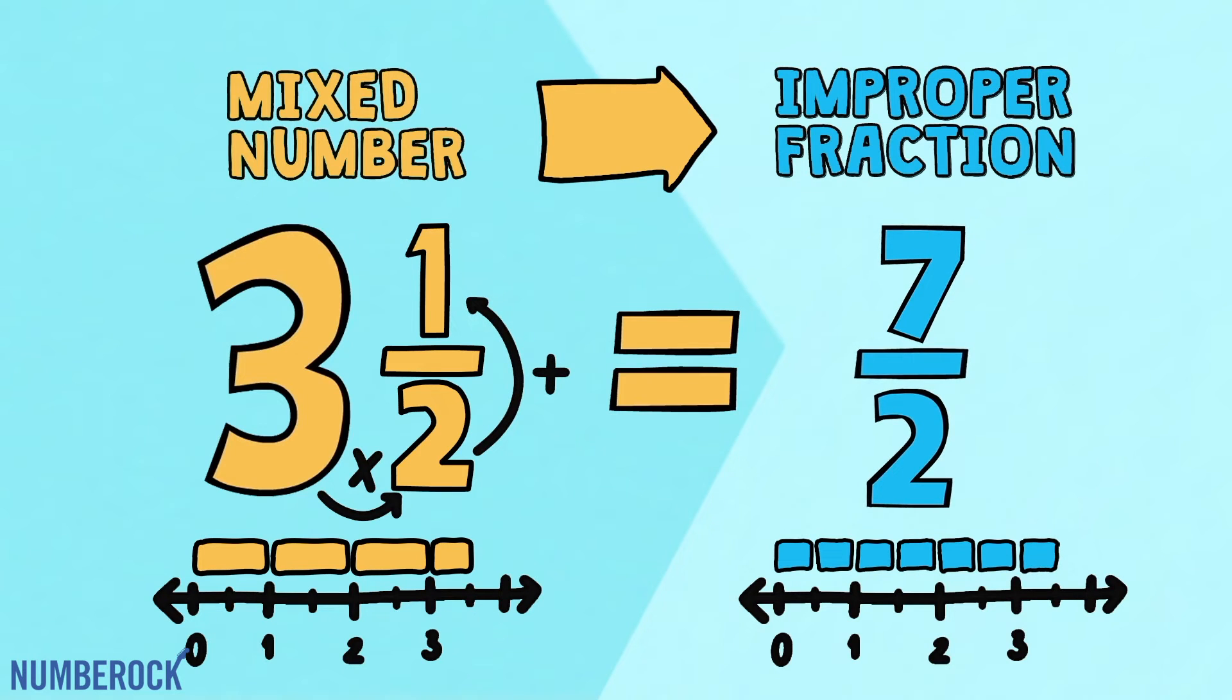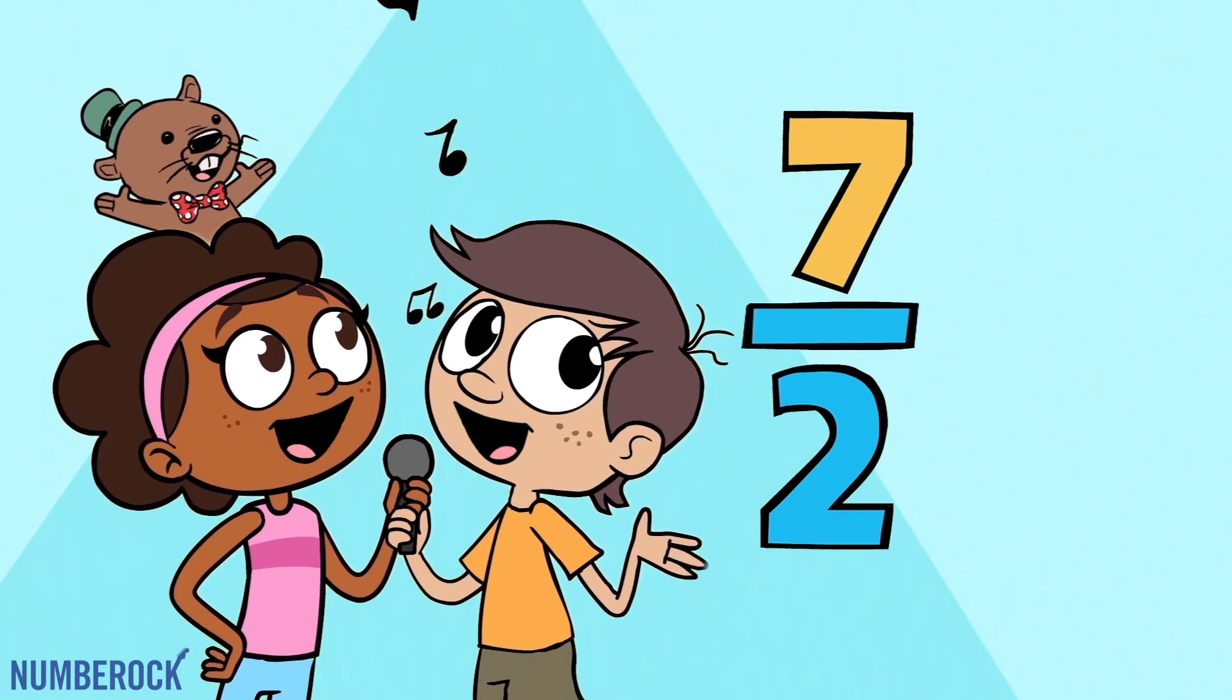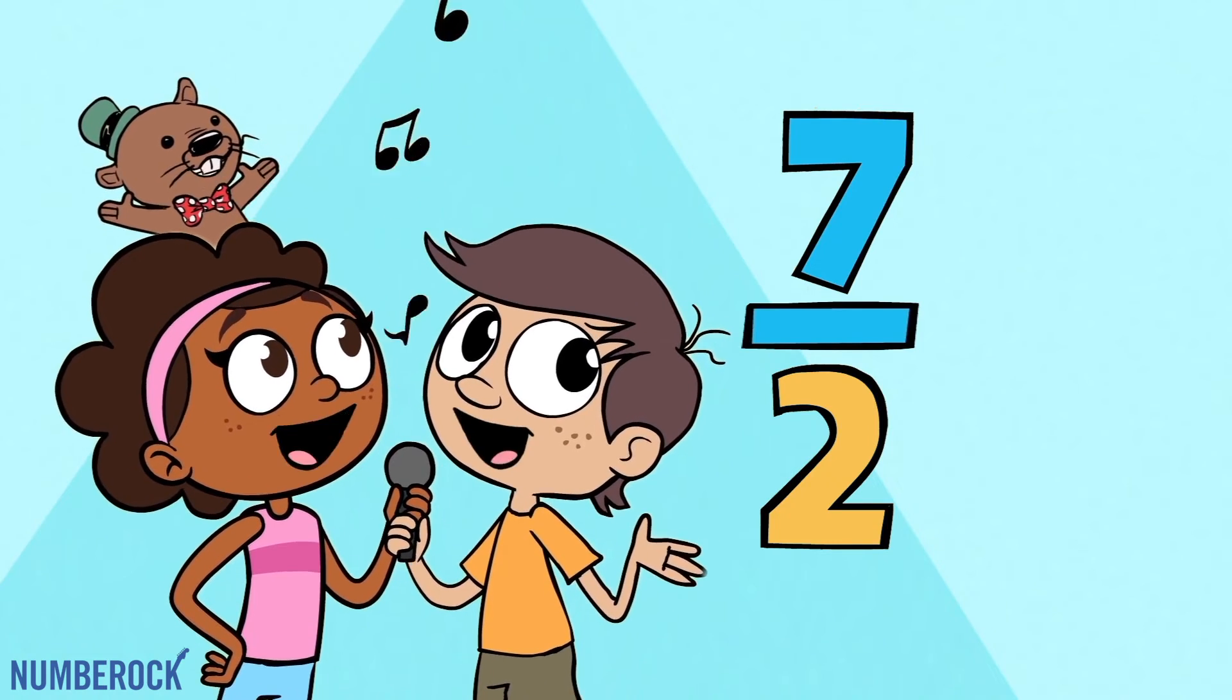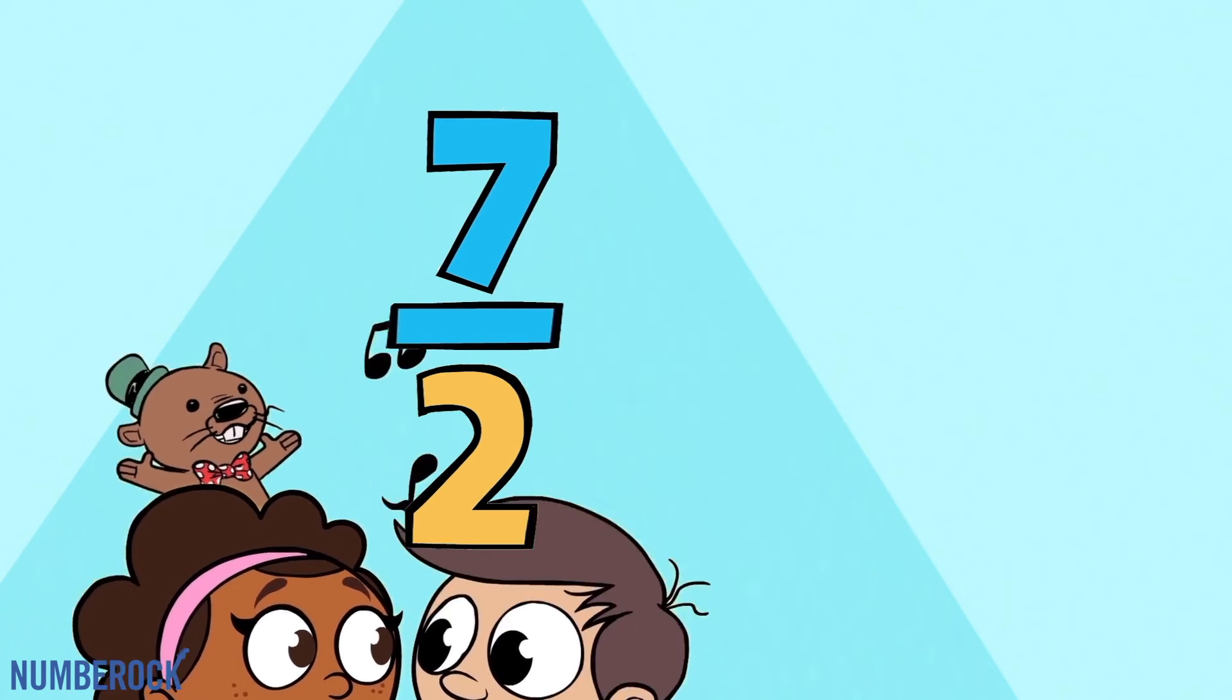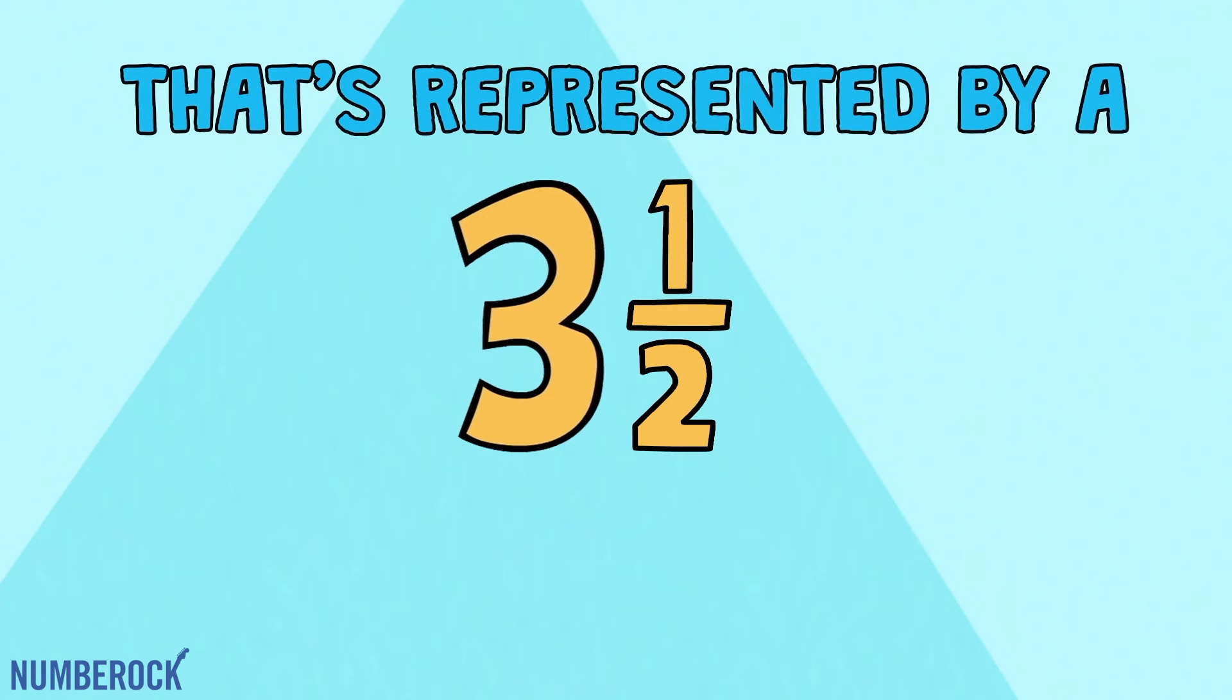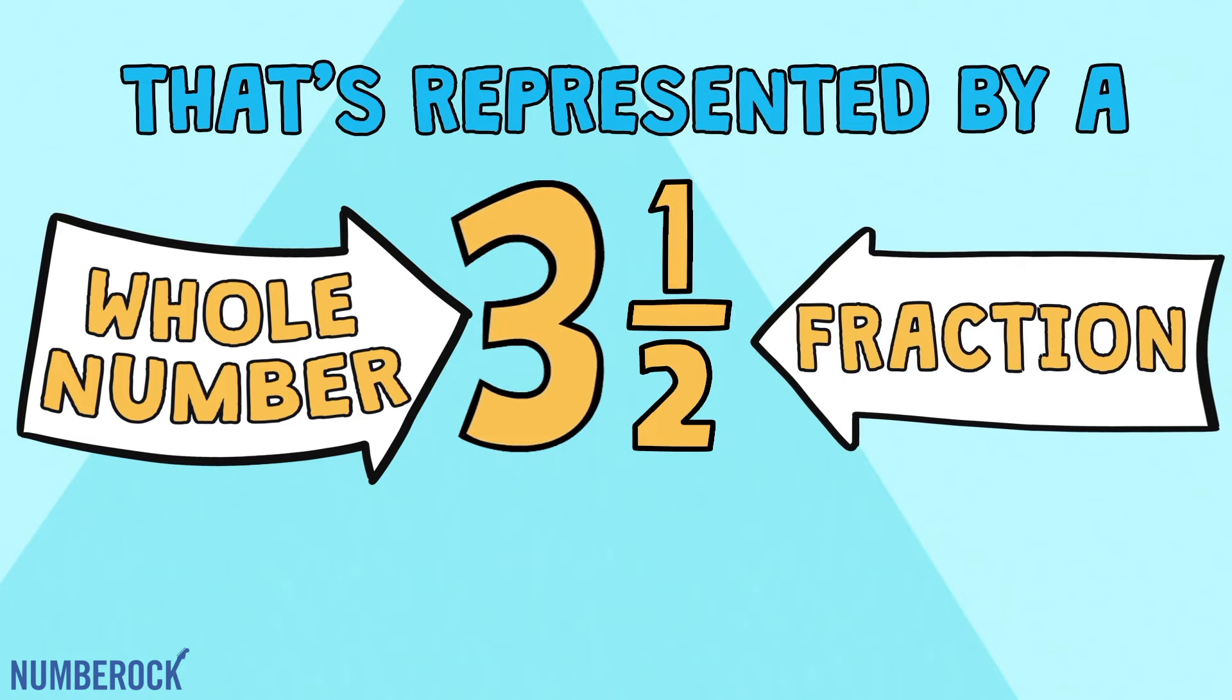Keep the denominator the same and then let the beat drop. An improper fraction has a numerator that's greater than or equal to the denominator. A mixed number has a value that is greater than one that's represented by a whole number and a fraction.